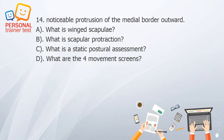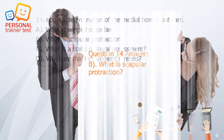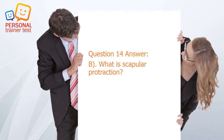Question 14. A. What is winged scapula? B. What is scapular protraction? C. What is a static postural assessment? D. What are the four movement screens? Answer: B. Scapular protraction is a noticeable protrusion of the medial border outward.